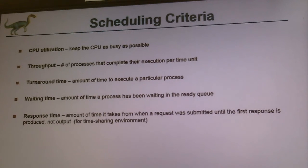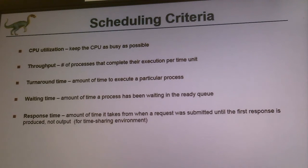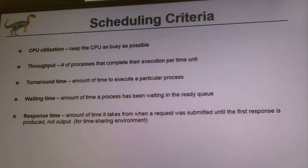Turnaround time is another scheduling criteria — the amount of time to execute a particular process. A process is read from the ready queue, loaded into the CPU — that is time zero. You run the process, it may be put back into the waiting queue and then read back, etc. The whole process time from start to finish — without counting the waiting time for other processes — is called turnaround time.